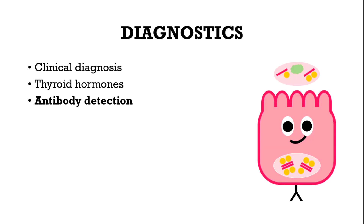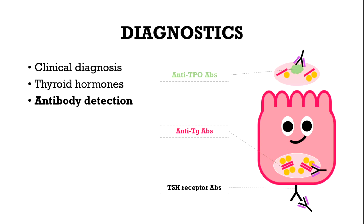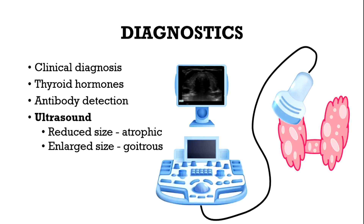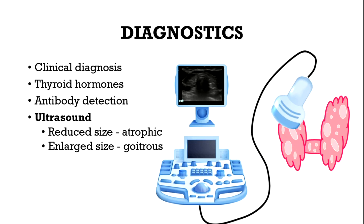Antibody detection is another reliable diagnostic tool. Antithyroid peroxidase, antithyroglobulin, and TSH receptor antibodies can be measured. If they are positive, other endocrinopathies should be considered, for example diabetes mellitus or Addison's disease, as these may be associated with autoimmune hypothyroidism. An ultrasound can also be done to assess thyroid size or to exclude thyroid malignancies.